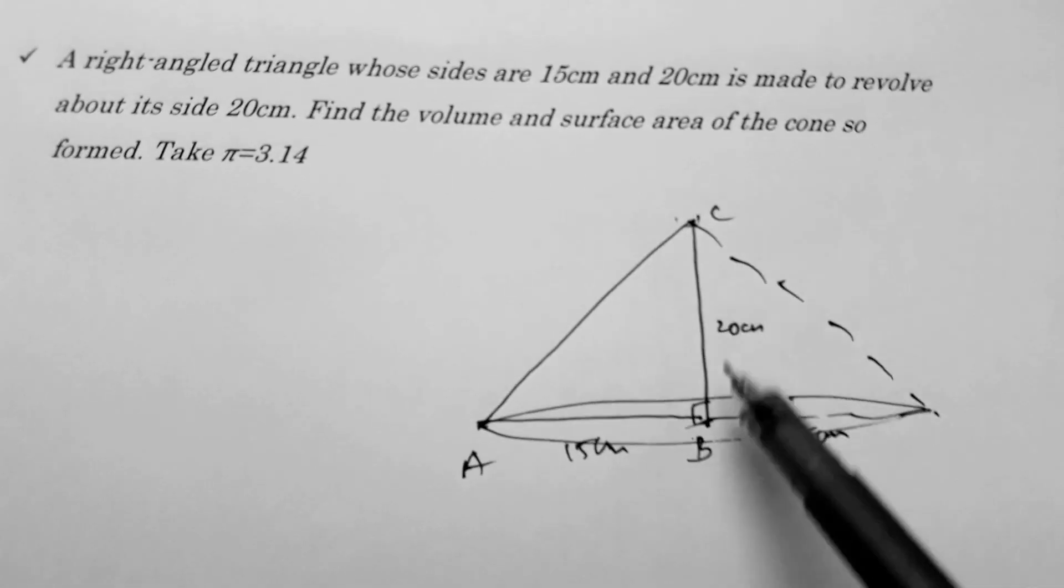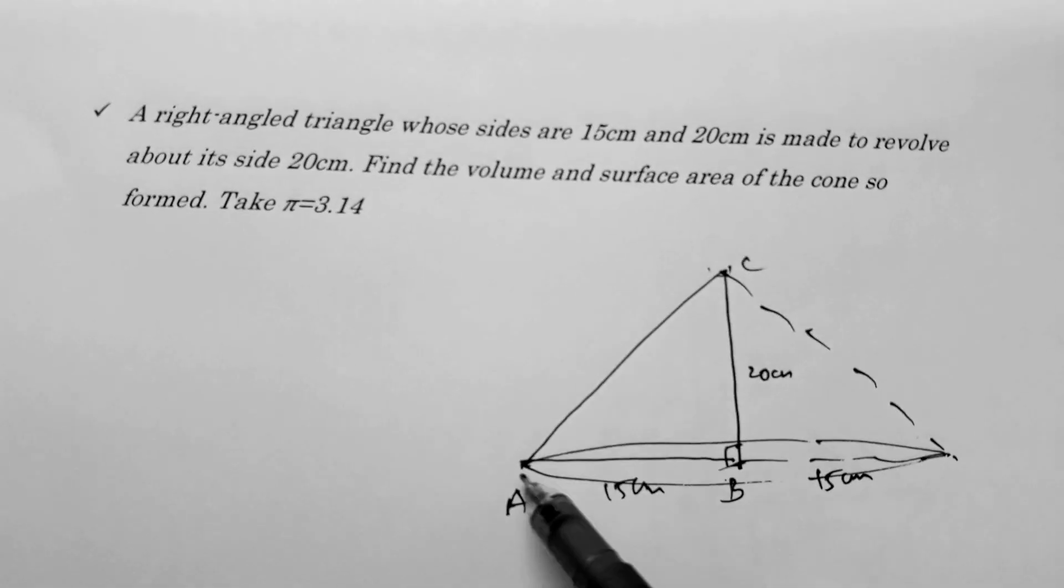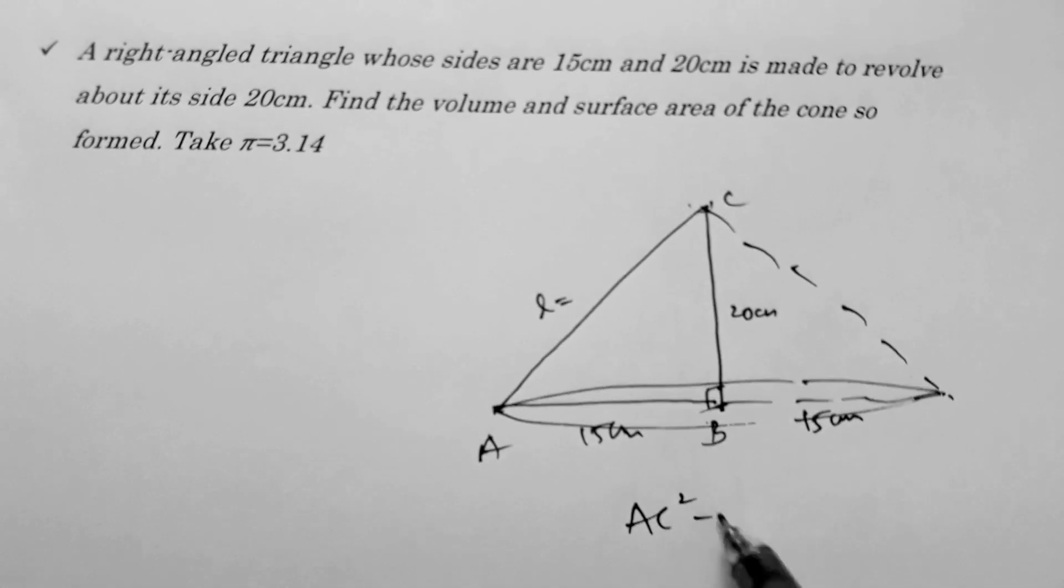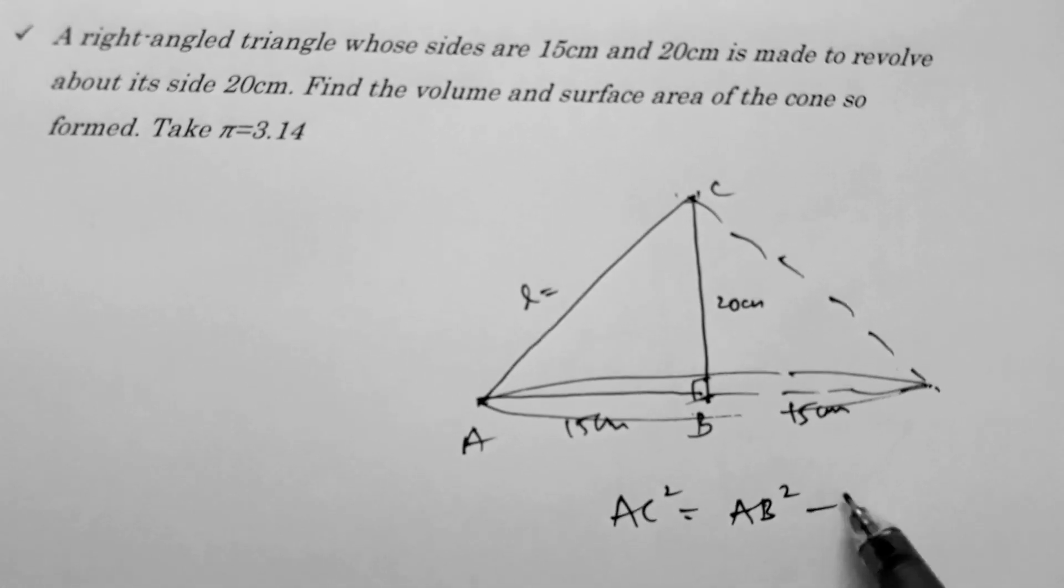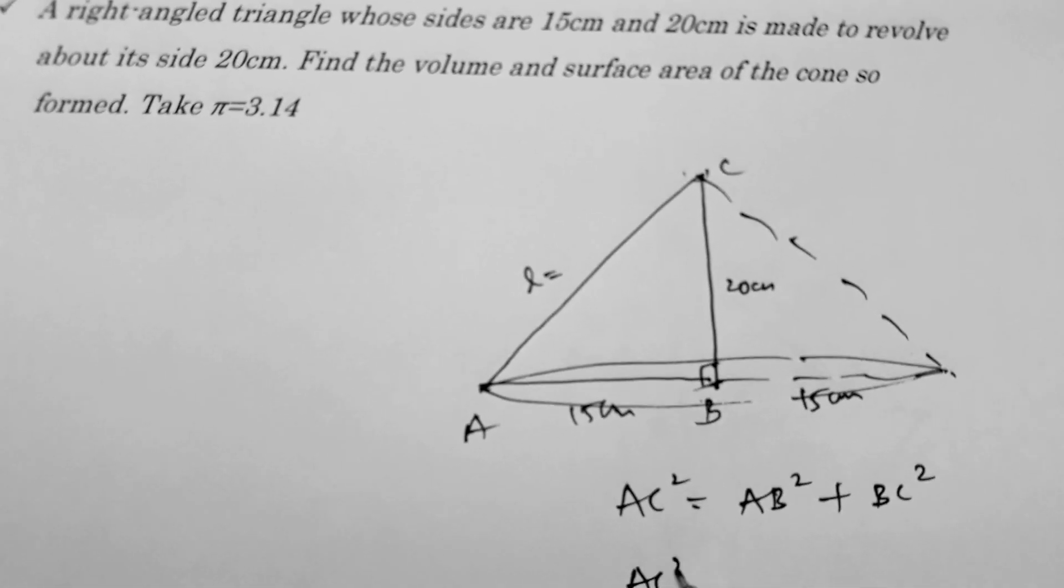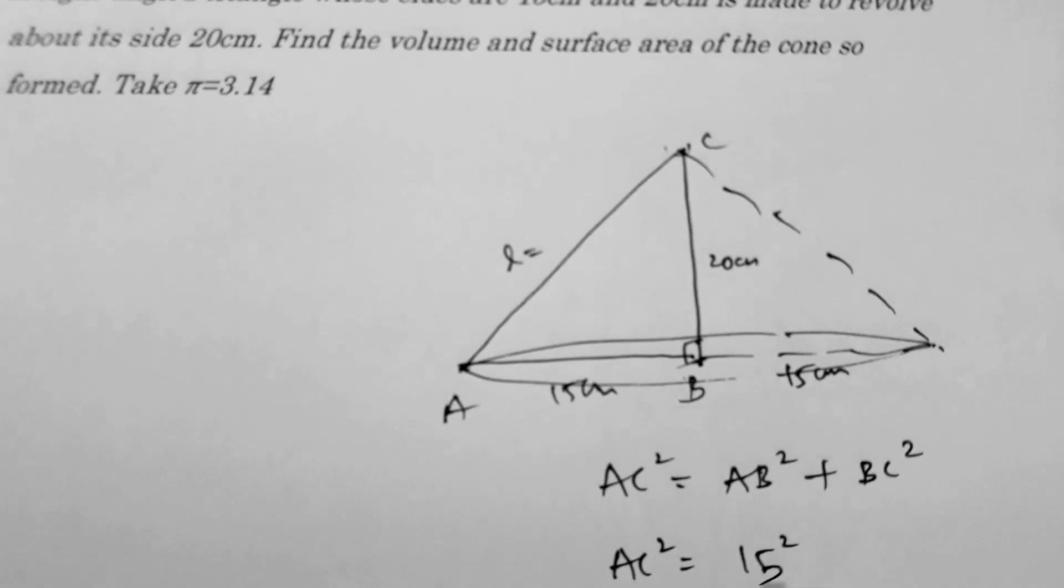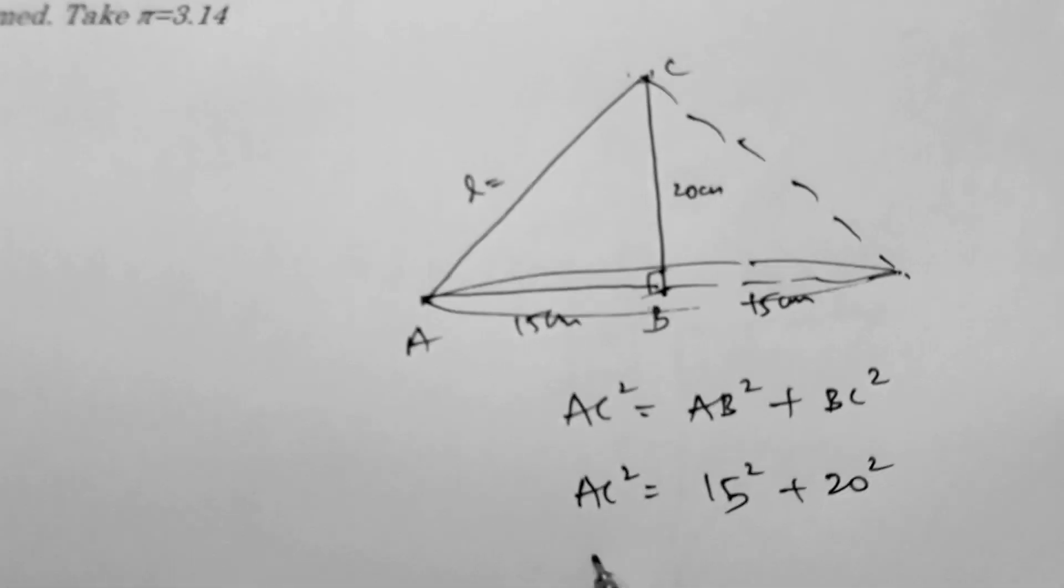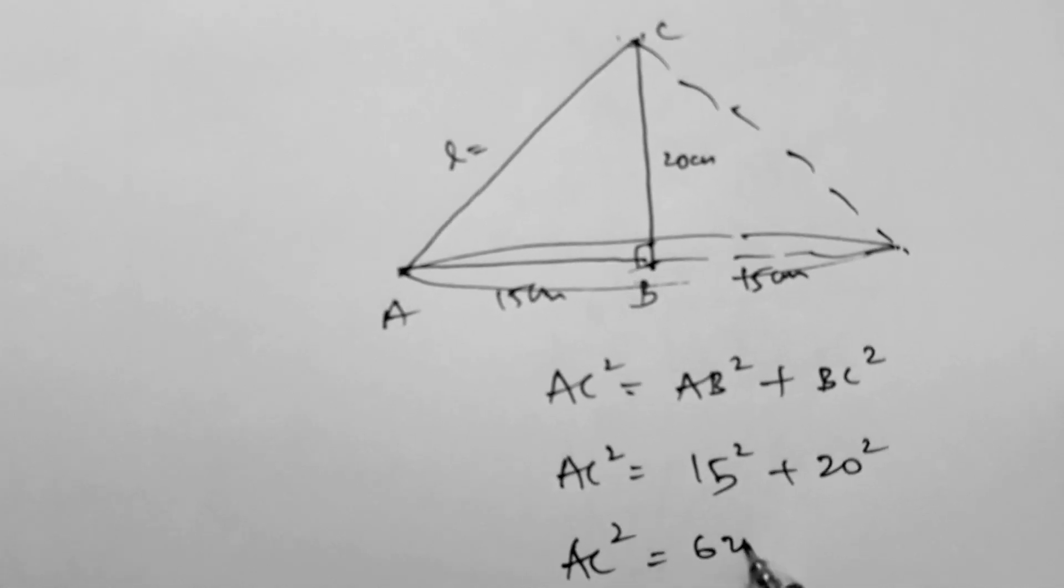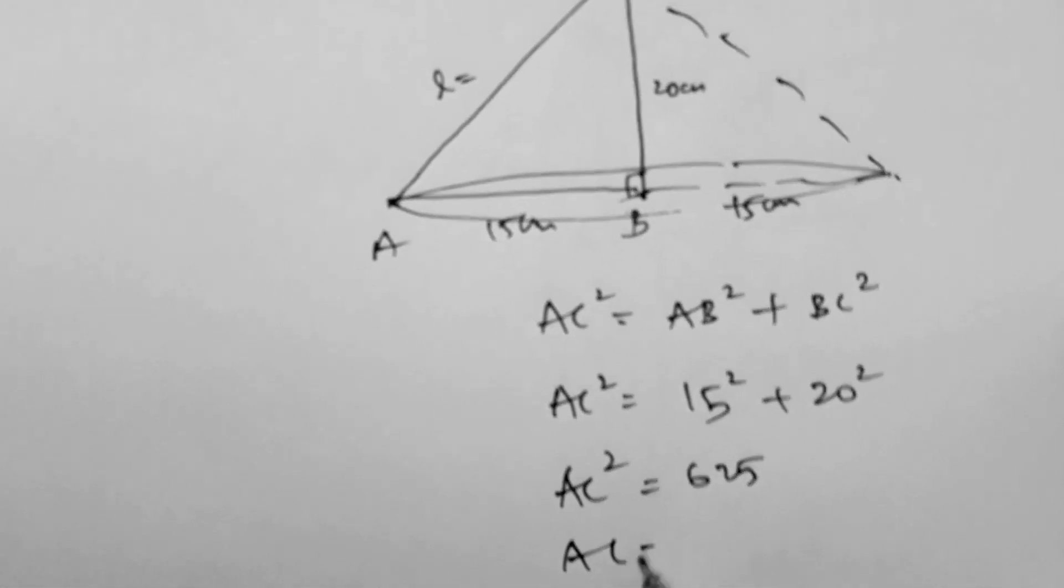Height will be 20 centimeters. Now we will apply Pythagorean theorem to find the slant height. AC² equals AB² plus BC², so AC² equals 15² plus 20², which gives us AC² equals 625.